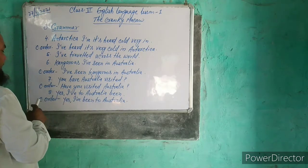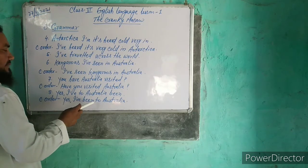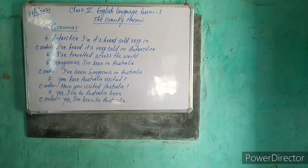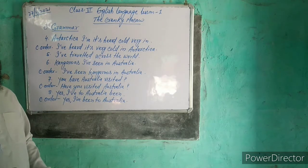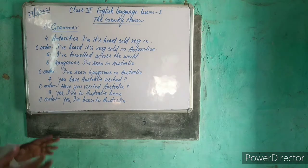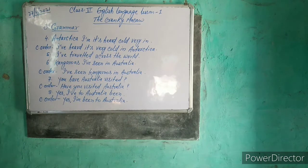The eighth sentence is: yes I to Australia been. The correct order is: Yes, I've been to Australia.